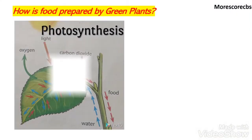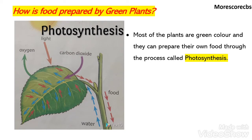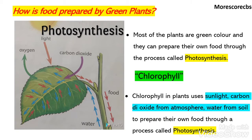Next, how is food prepared by green plants? Most of the plants around us are green in color. The green color of the plant is due to the presence of chlorophyll. Chlorophyll in plants uses light from the sun, carbon dioxide from the atmosphere, and water from the soil to prepare their own food through the process called photosynthesis.